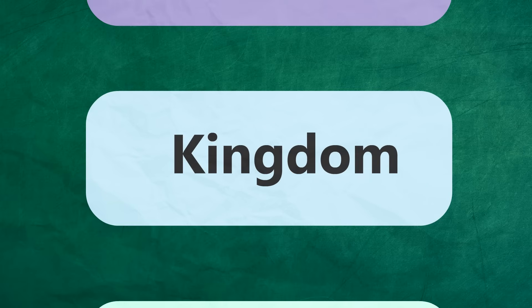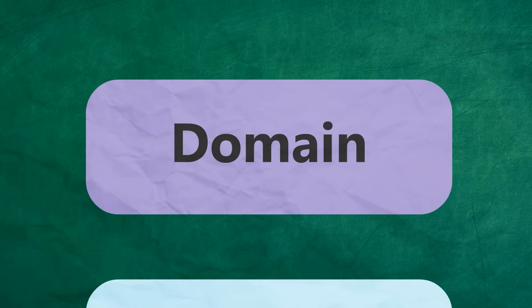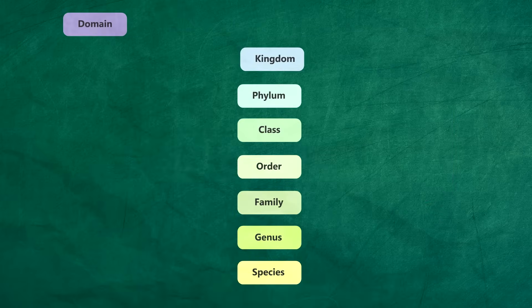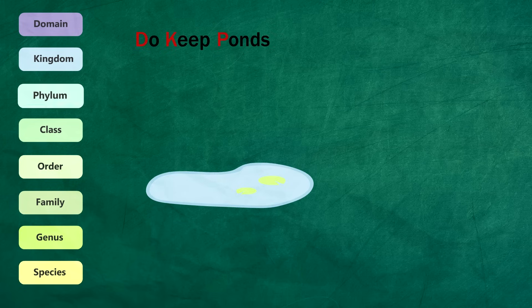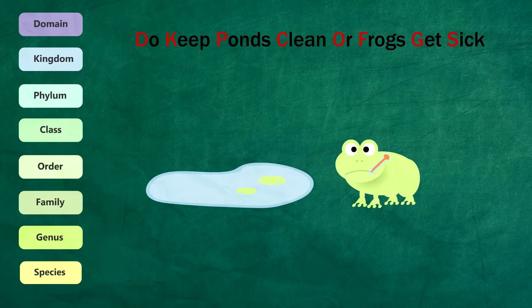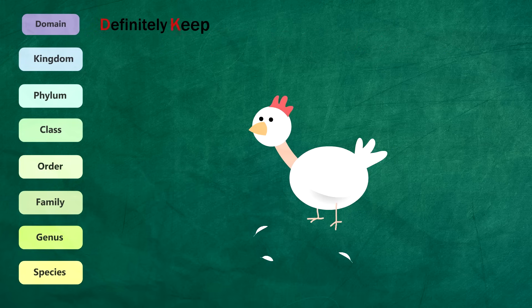Kingdom is the second highest rank below the rank of domain in the sequence of classification. Remember that little rhyme from the classifying organisms video: do keep ponds clean or frogs get sick, or you might prefer this one, definitely keep plucking chickens or face getting sacked.